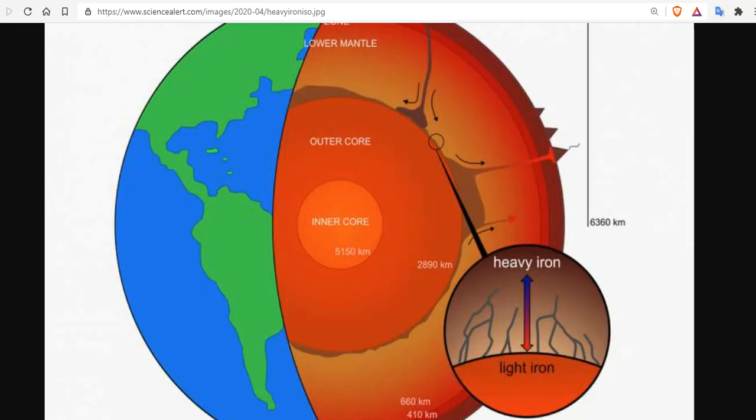Now, not all of Earth's polarity reversal attempts are successful. And this is what we call magnetic excursion. And these happen about every 12,500 years. And the last one happened during the Younger Dryas event, 12,900 years ago. So we're overdue for this excursion, which we are now living.